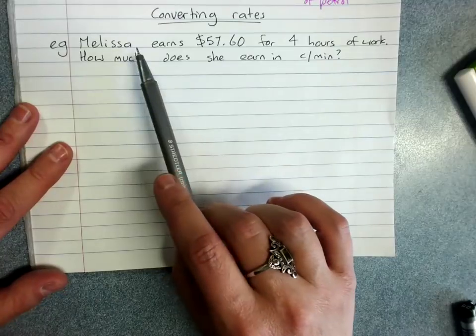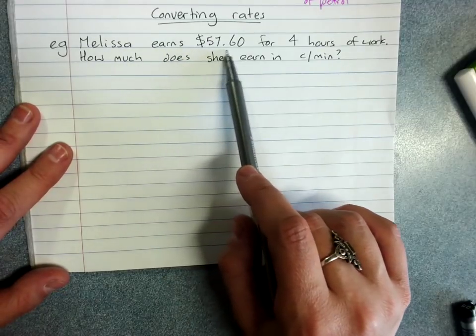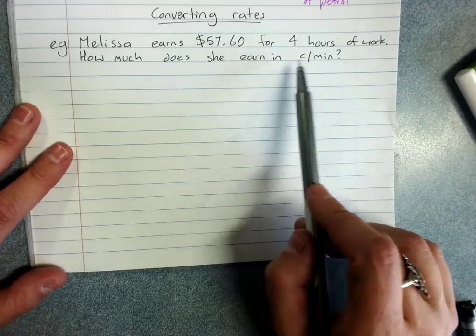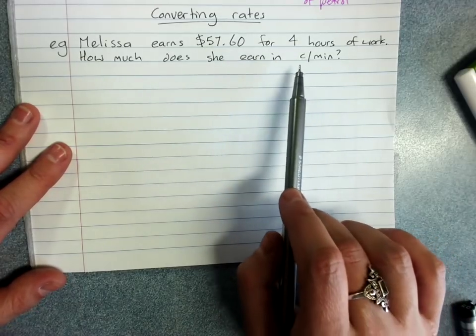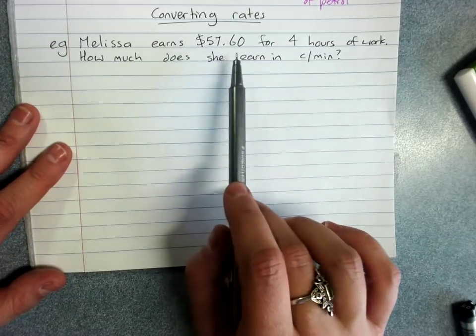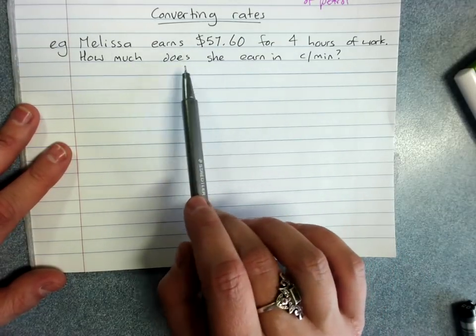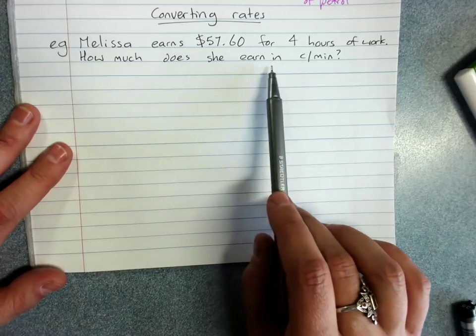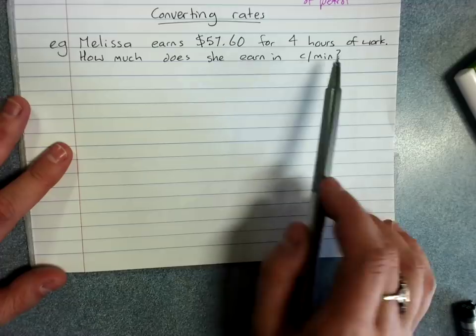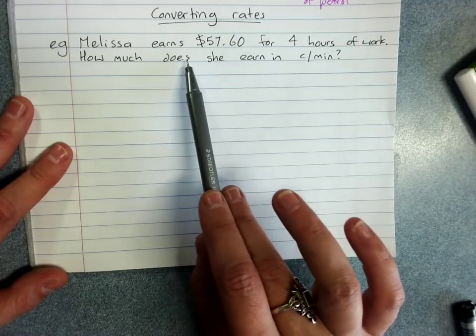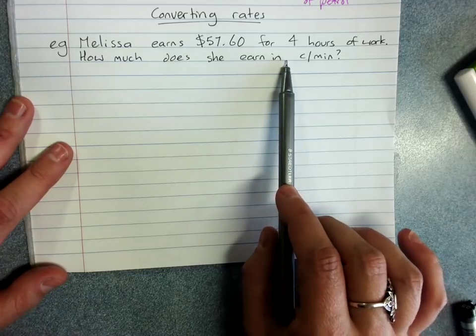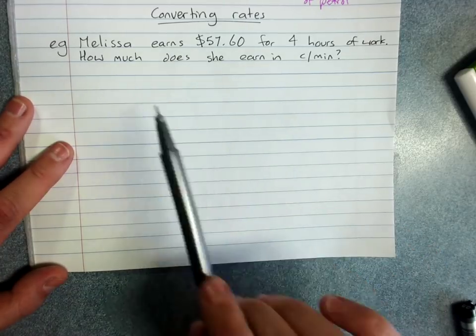So this question: Melissa earns $57.60 for four hours of work. How much does she earn in cents per minute? So this would let Melissa work out how much money she's earning every single minute she's at work. Sometimes you might know what you earn for a year and you could work out how many hours you work in that year and you could work out what you're earning per hour. Or you might be given speed in meters per second but you want to know what you're doing in kilometers per hour, and we've got to be able to convert.